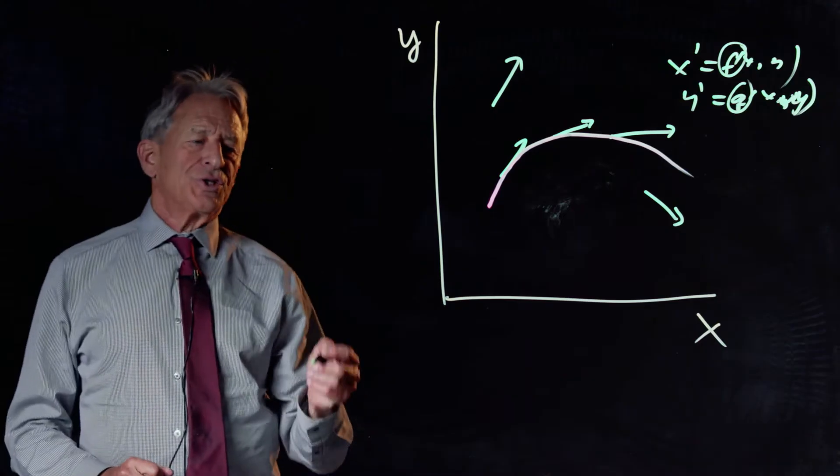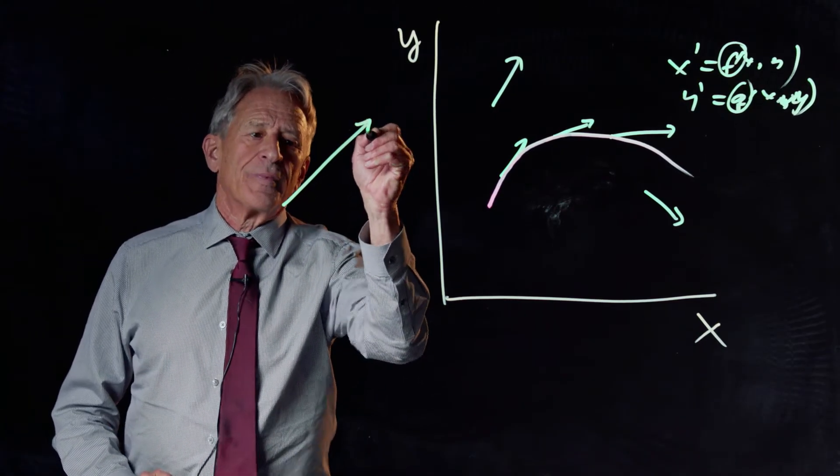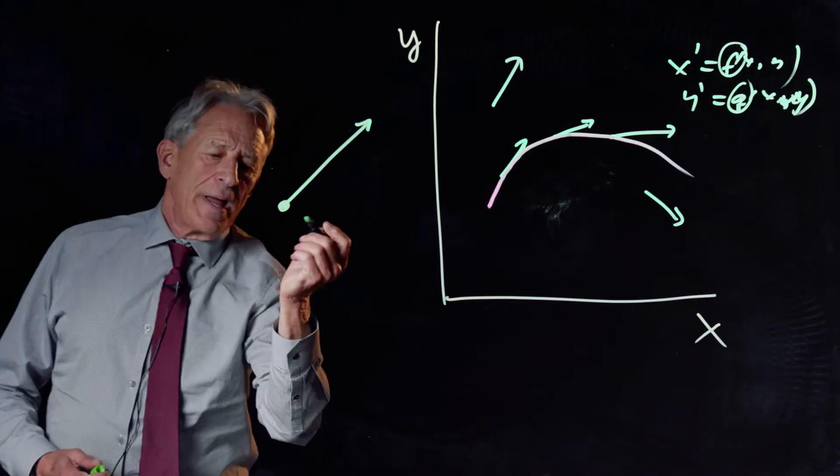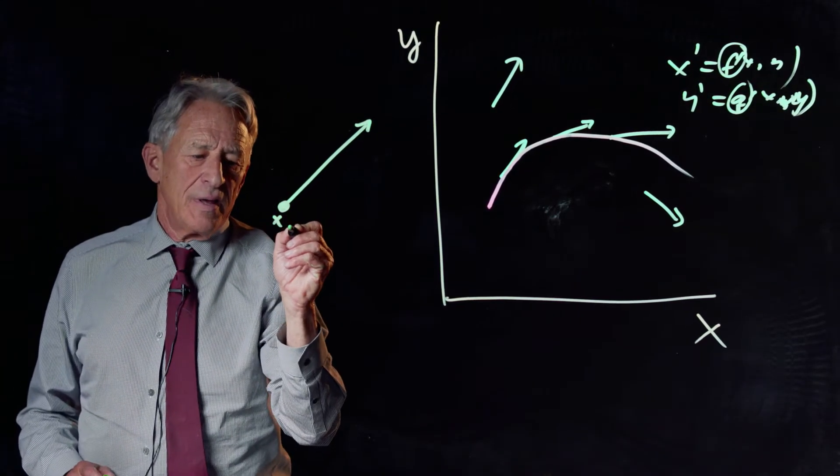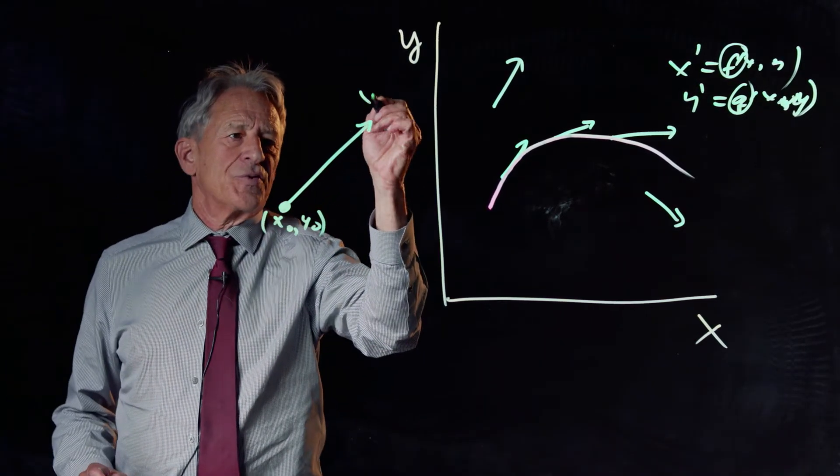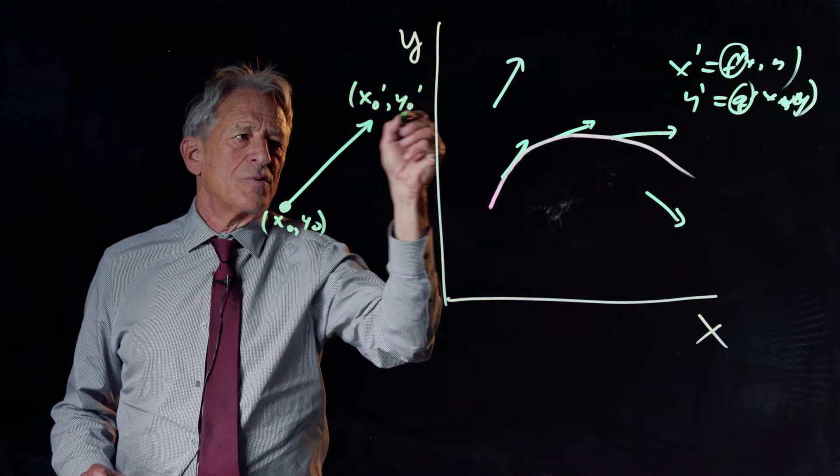And here's how we do that. The original change arrow, and I'm just going to draw this really big here. Here's the original change arrow at the point, let's say, x0, y0. And that is, of course, the change vector in the direction x0 prime, y0 prime.